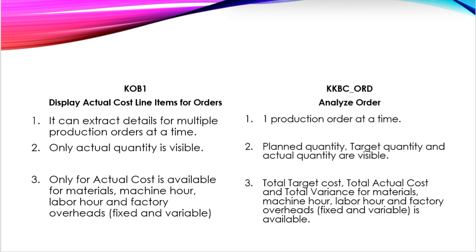In KOB1, you can view actual cost for material, machine hours, labor hours, and factory overhead fixed and variable. While in KKBC-ORD, you can view total target cost, total actual cost, and total variance for materials, machine hours, labor hours, and factory overhead fixed and variable.